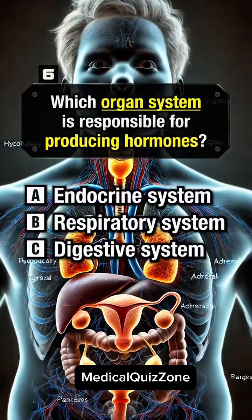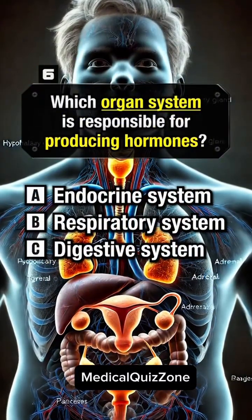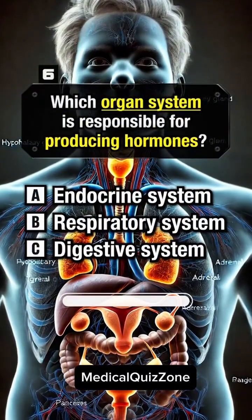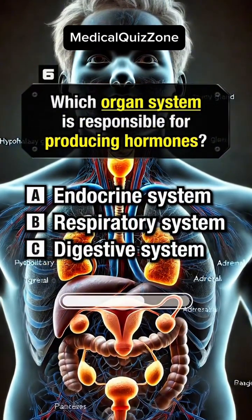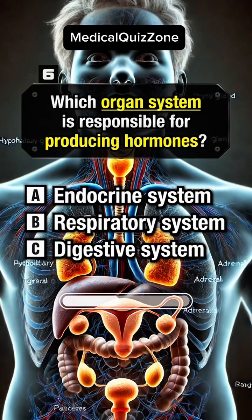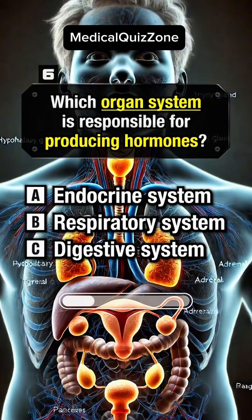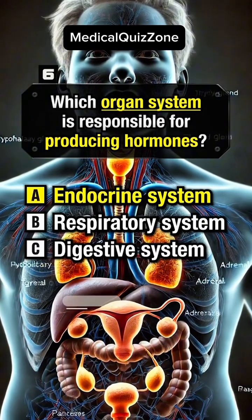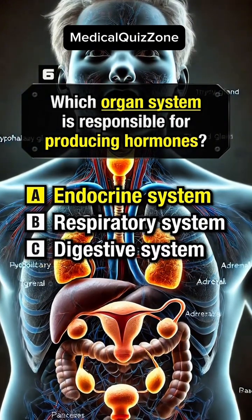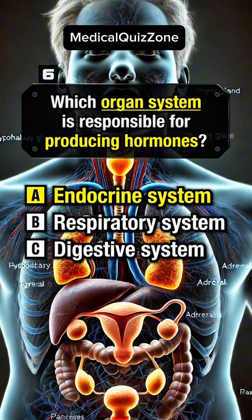Which organ system is responsible for producing hormones? Answer A: Endocrine system.